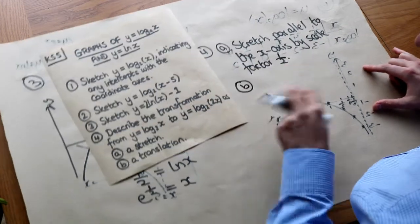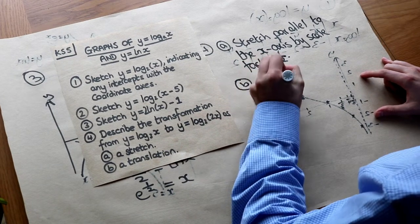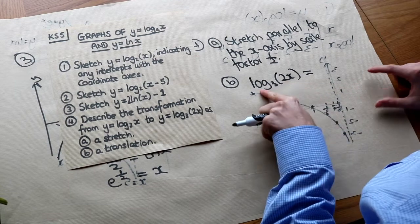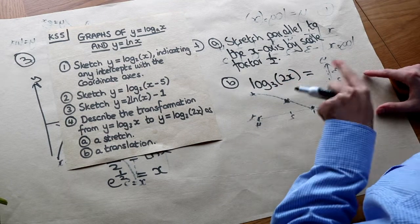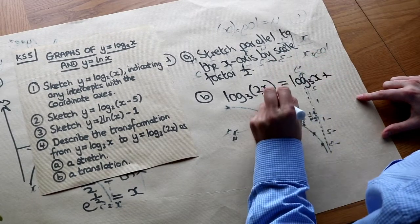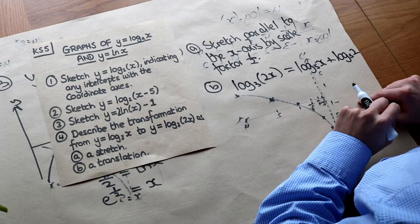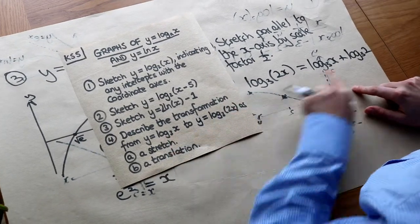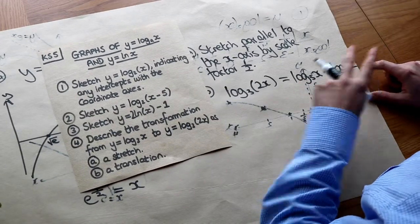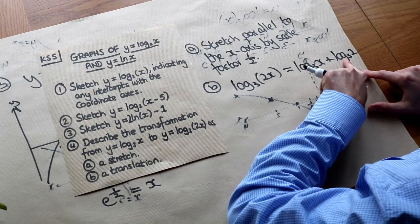But we could also do this as a translation as well, and the way to do that is to use laws of logs. So log base 3 of 2x, now we use laws of logs because that's log of a product. But do you remember that log of a times b is equal to log a plus log b? So we could write that as log base 3 of x plus log base 3 of 2, or added the other way around. So we can see that we have the same graph as before, we've got the log base 3 of x, but we've added log base 3 of 2. Now that addition is outside this log function, and therefore it's going to affect the y values. So we can see it's going to translate it upwards by log base 3 of 2.